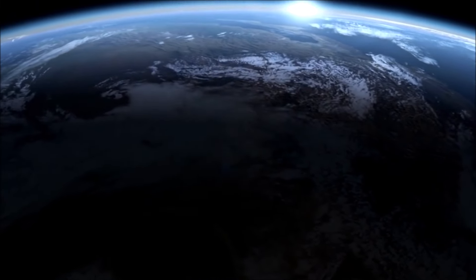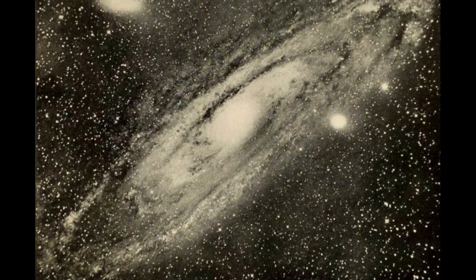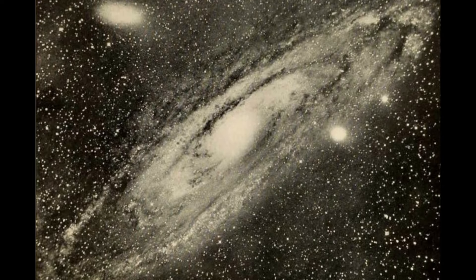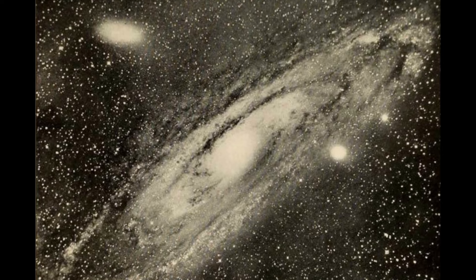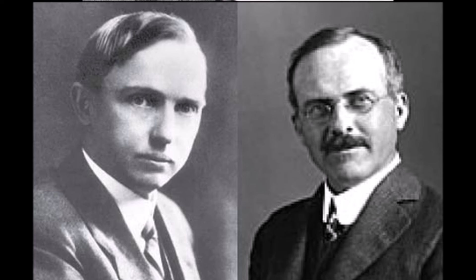25 years later, another so-called nebula was causing controversy, Messier 31. Some were starting to speculate that this object may actually be extra-galactic. This led to the great debate of 1920, where Heber Curtis proposed that Messier 31 may be a separate star structure to the Milky Way.